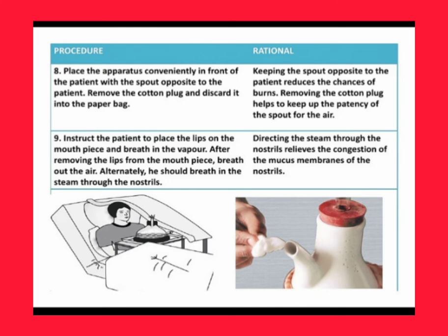Step nine: instruct the patient to place the lips on the mouthpiece and breathe in the vapor. After removing the lips from the mouthpiece, breathe out the air. Alternately, he should also breathe in the steam through the nostrils. Instruct the patient to take air in by placing lips on the mouthpiece, then remove the lips and breathe out, and also take steam through the nostrils.